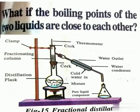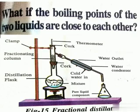The glass beads provide maximum possible surface area for the vapors to cool and condense repeatedly. In the fractional distillation process, the apparatus components include a flask, stand, thermometer, water condenser, conical flask, clamp, and one extra component — the fractionating column. This fractionating column is fitted between the distillation flask and the condenser; it is a tube packed with glass beads.